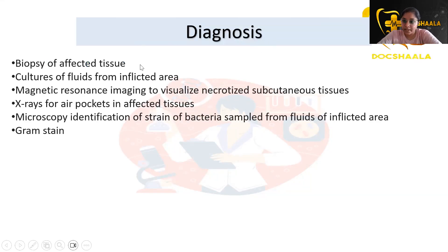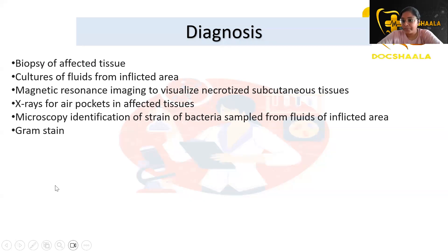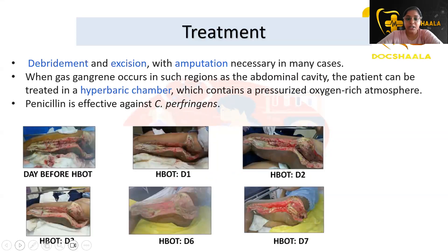Coming to diagnosis: biopsy of the affected tissue site is taken, culture of the blister fluids is done, MRI is used to visualize the necrotized subcutaneous tissue, x-rays are used to detect air pockets in affected tissues, and microscopic identification of the bacteria is done. Since it is a bacterium, gram staining is also performed.